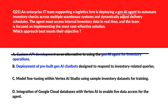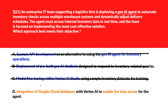We'll move to Option C. Option C says model fine-tuning with Vertex AI Studio using sample inventory datasets for training. Fine-tuning improves model behavior but doesn't connect to live inventory data. Let's delete it and move to Option D.